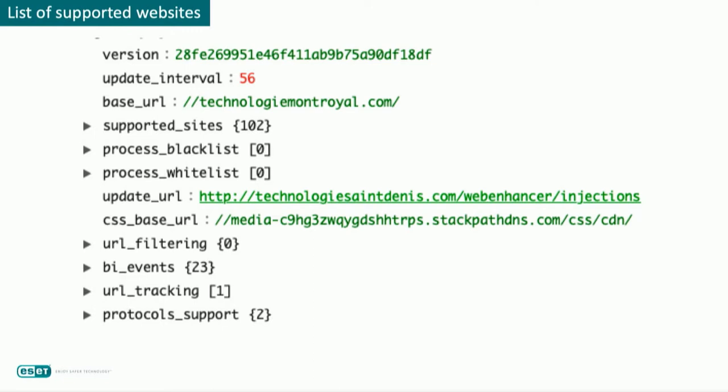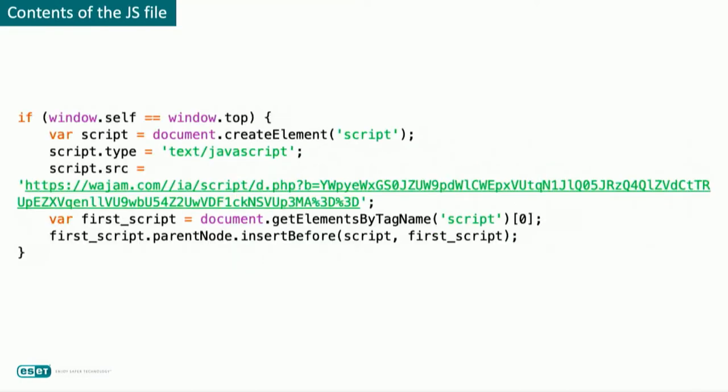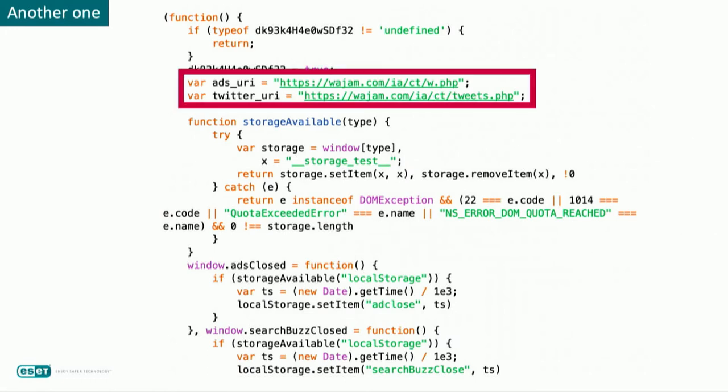There is also a field to blacklist some processes. Looking at one example, there is the regex pattern to match the website — Google, for example — and the path of the remote JavaScript file to inject. This is the JavaScript file for Google, which injects another file responsible for the ad injection.